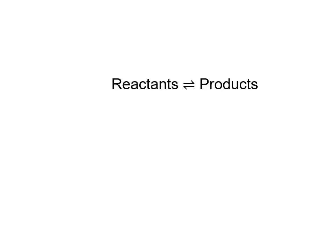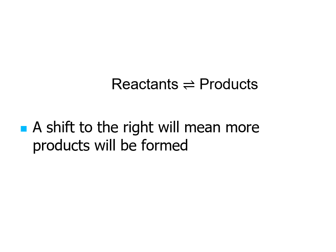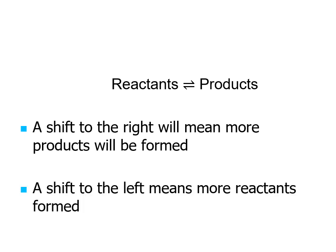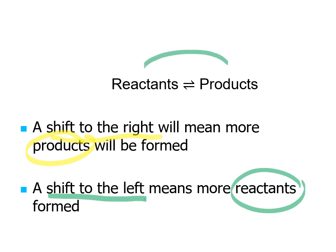We're going to use the term 'shift to the right' to refer to more products being formed, and 'shift to the left' when we're making more reactants. A shift to the left means the products are being consumed and making the reactants, and a shift to the right means the reactants are being used and making the products. It'll start at equilibrium, go through the shift, and re-establish a new equilibrium with new concentrations.